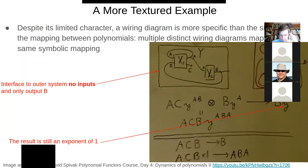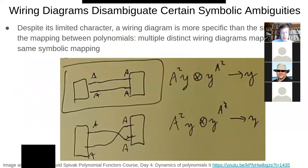Those are our two mappings. Those have been the focus for polynomial functors course lecture three from Topos and for lecture four as well. Okay.